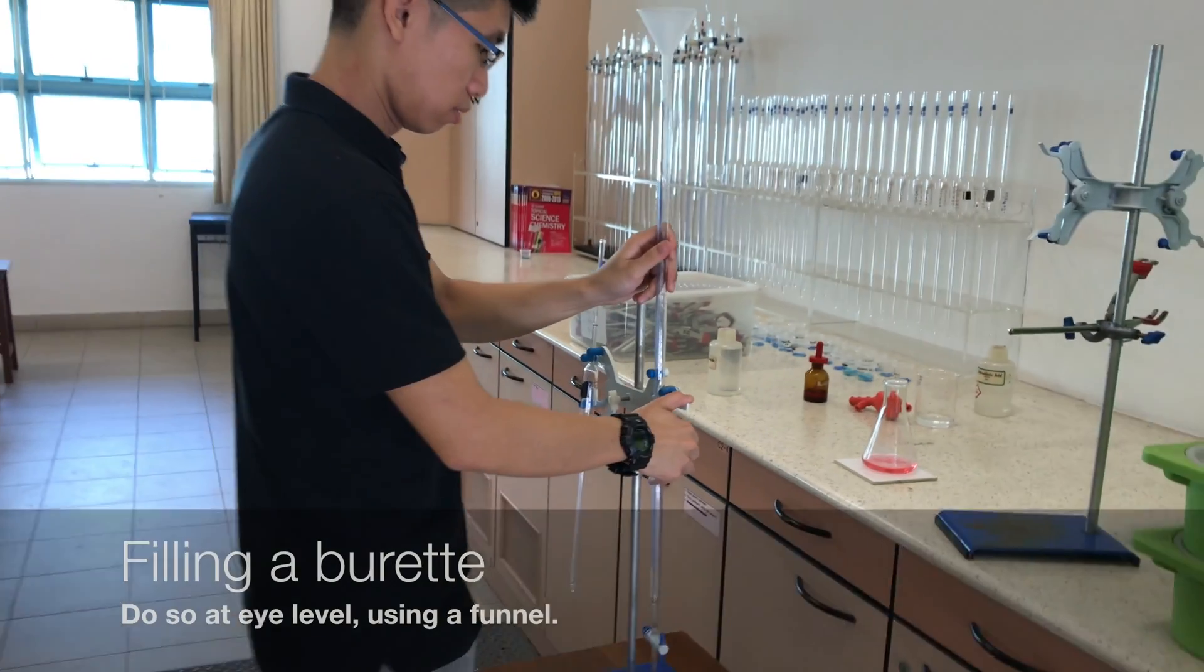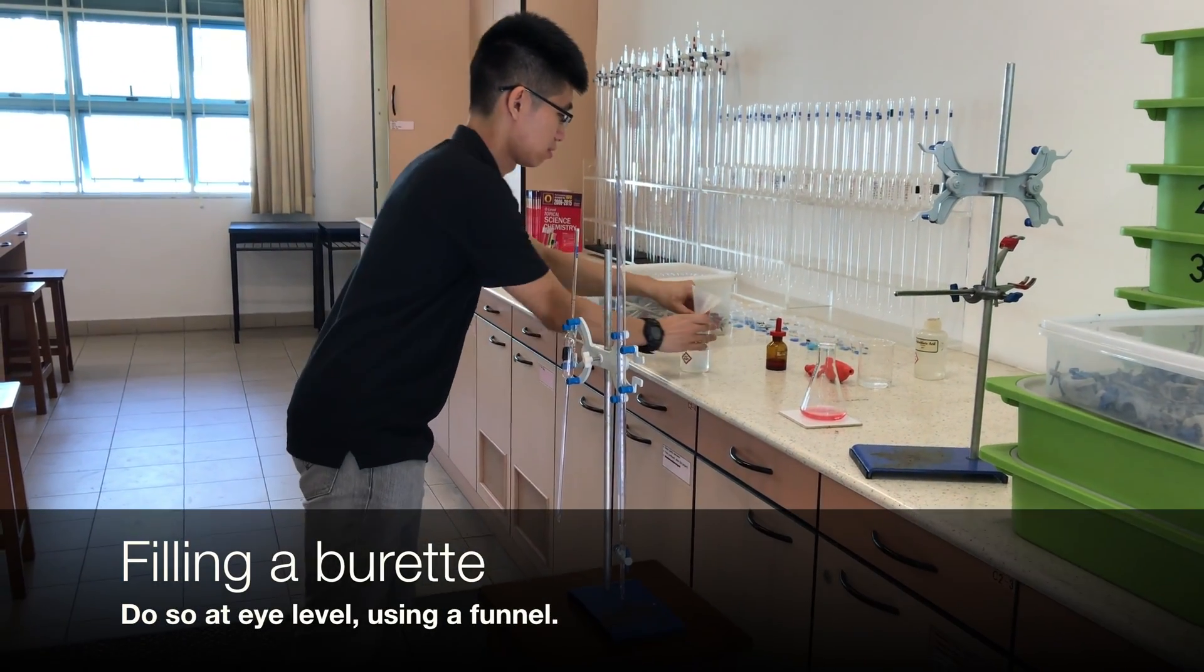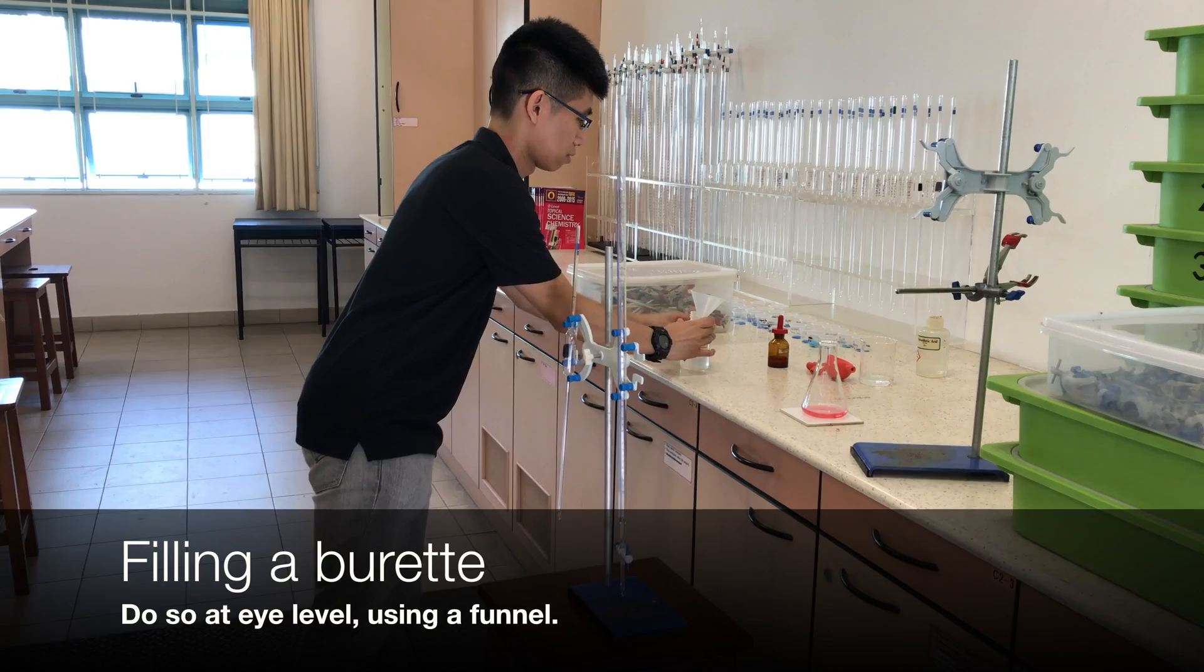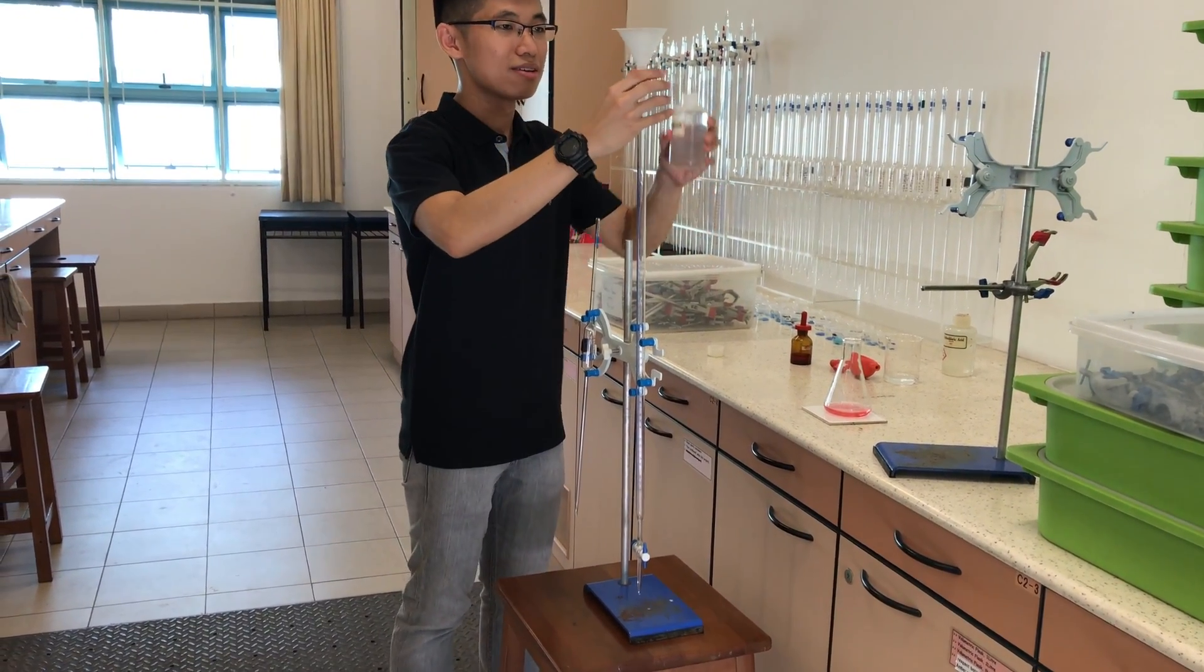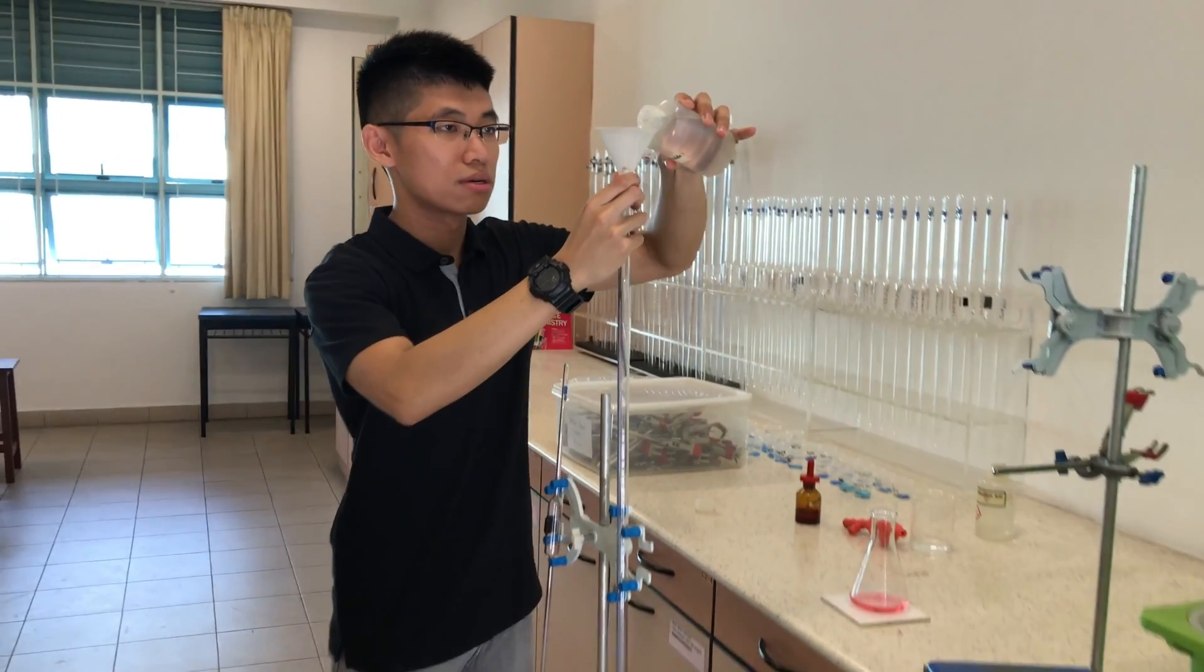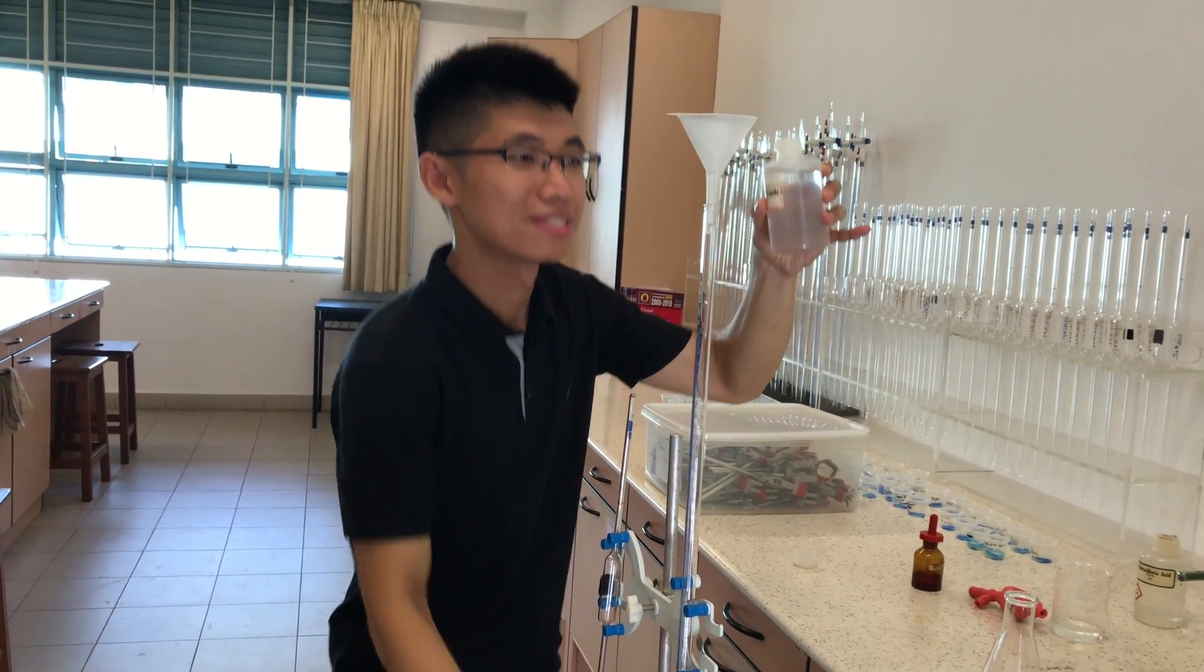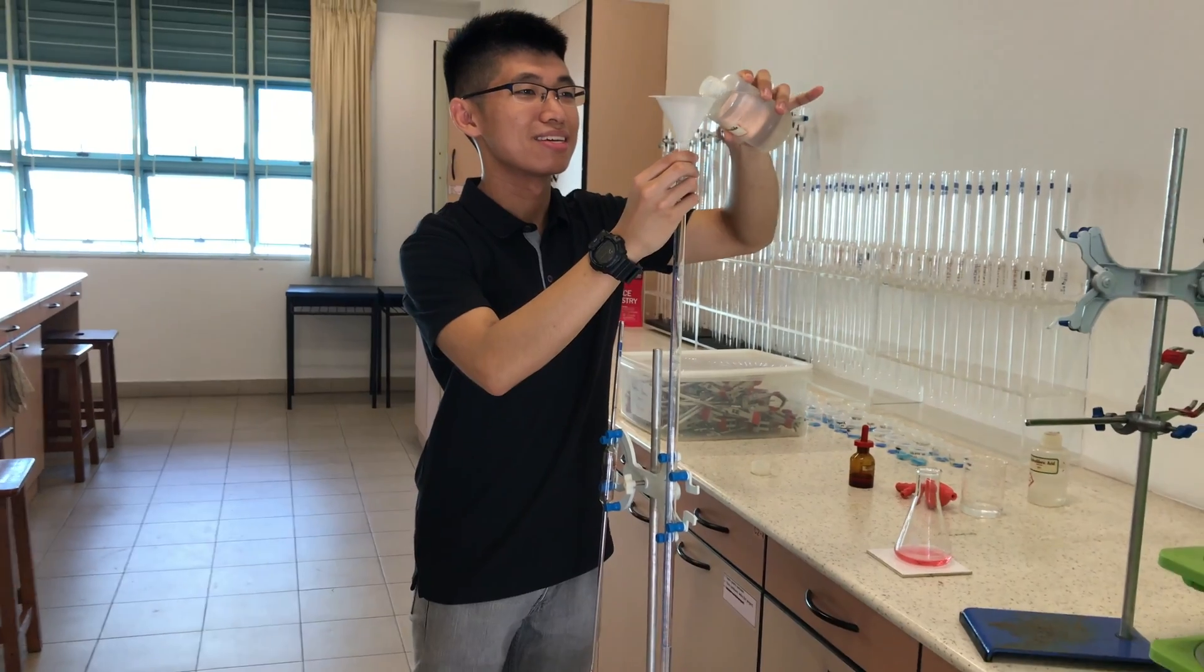We now move on to filling up the burette. We will place the whole retort stand onto a bench so that we can fill the burette at high level. Place a filter funnel at the top and gently pour in the reagent into the filter funnel, ensuring that the tap is closed.